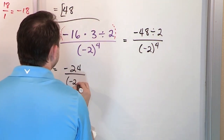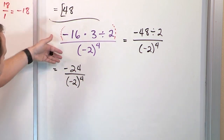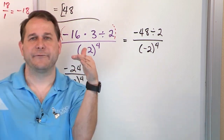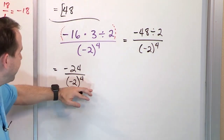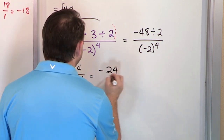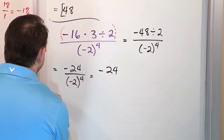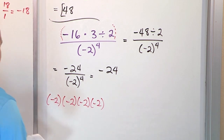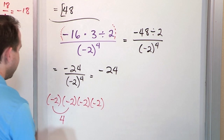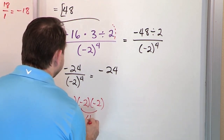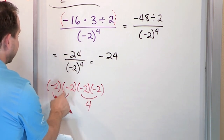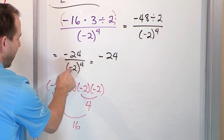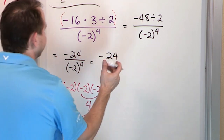On the bottom, we have negative 2 raised to the fourth power. After finishing the numerator, we handle exponents next in the order of operations. Negative 2 to the fourth means negative 2 times negative 2 times negative 2 times negative 2. The first pair gives positive 4, and the second pair gives positive 4 — because negative times negative is positive. Then 4 times 4 is 16. So even though we were multiplying negatives, doing it four times gives a positive 16 on the bottom.